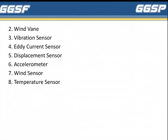Second is Wind Vane. Third is Vibration Sensor. Fourth is AC Current Sensor. Fifth is Displacement Sensor. Sixth is Accelerometer. Seventh is Wind Sensor. And the last one is Temperature Sensor.